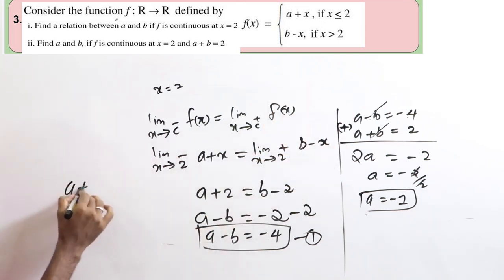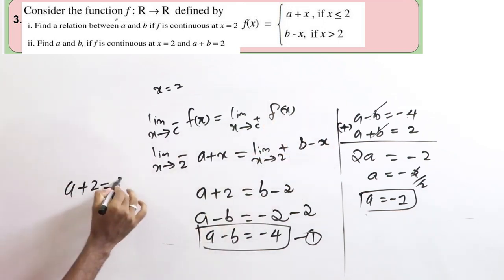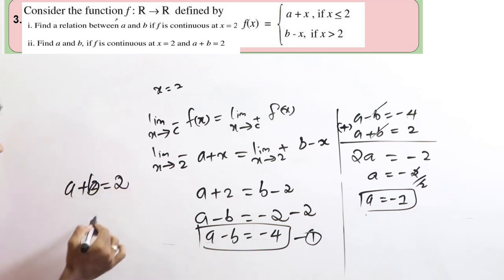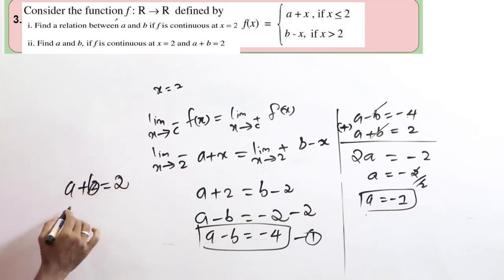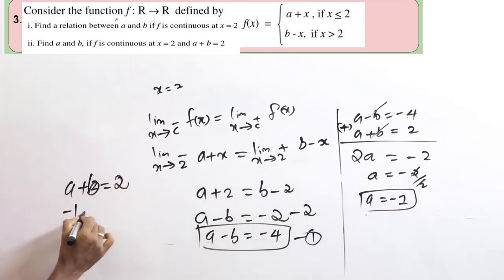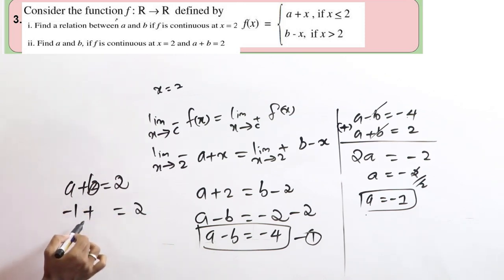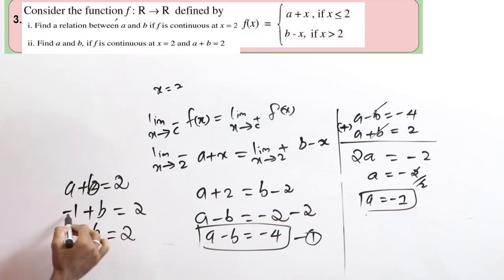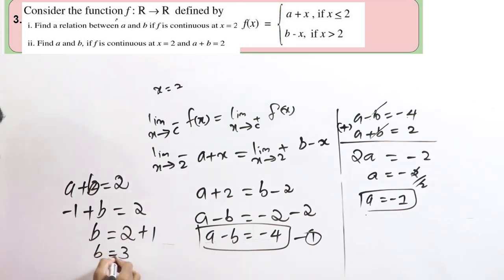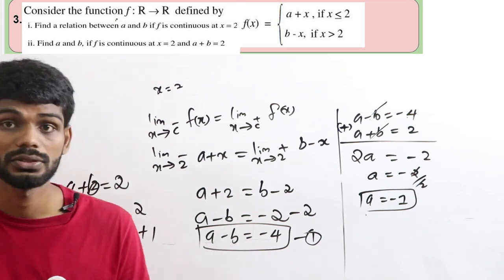From a plus b equals 2: minus 1 plus b equals 2, so b equals 3.